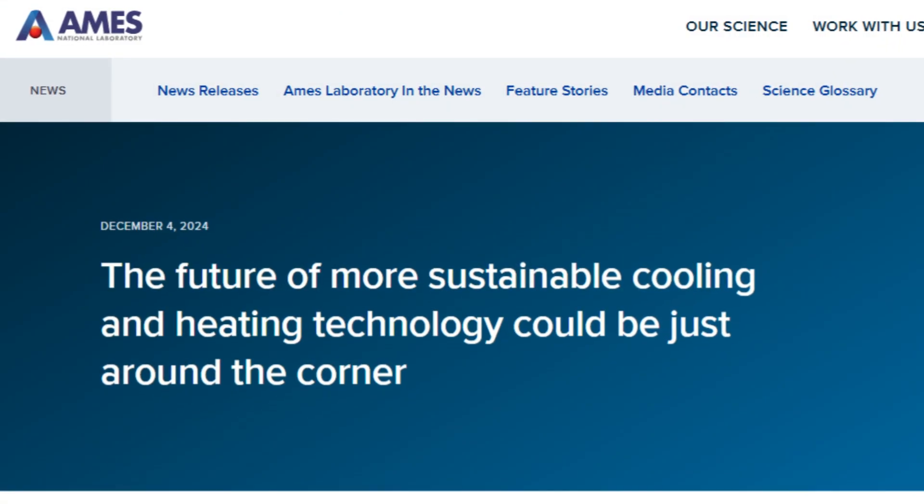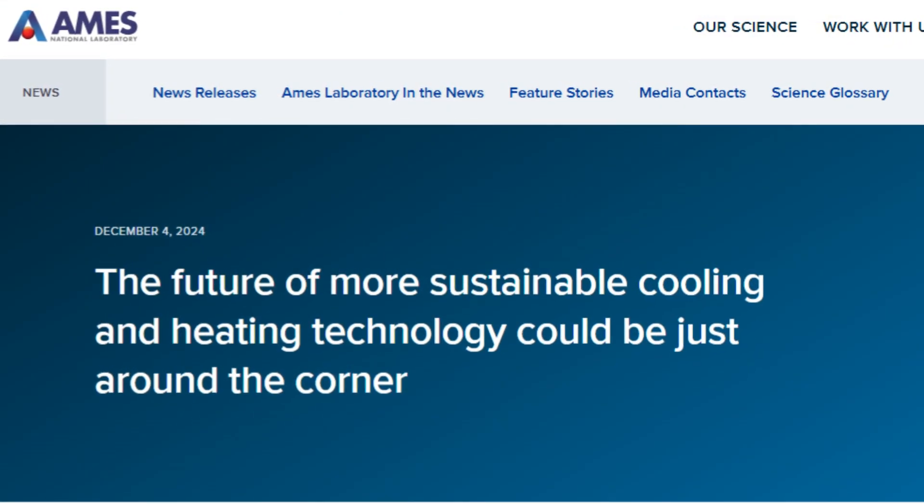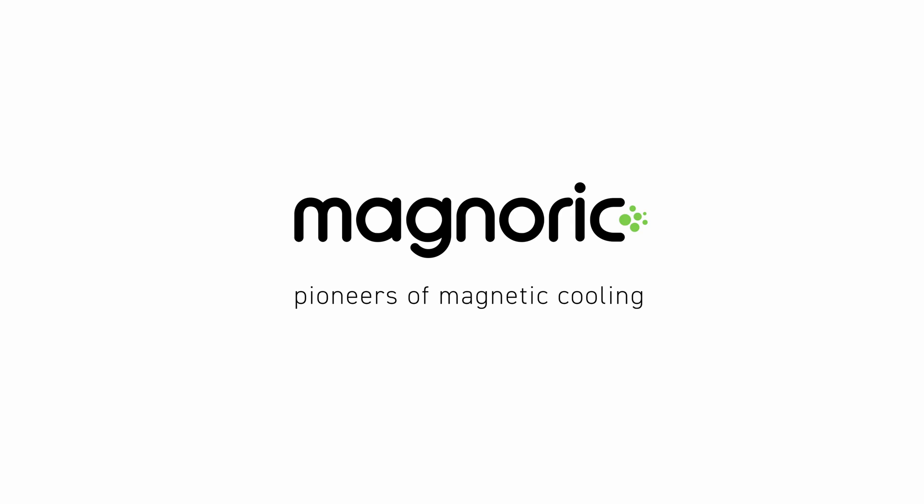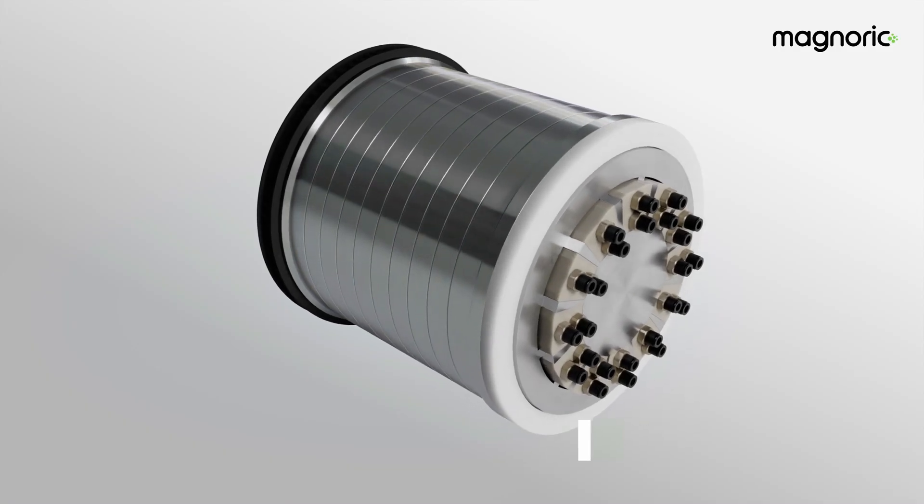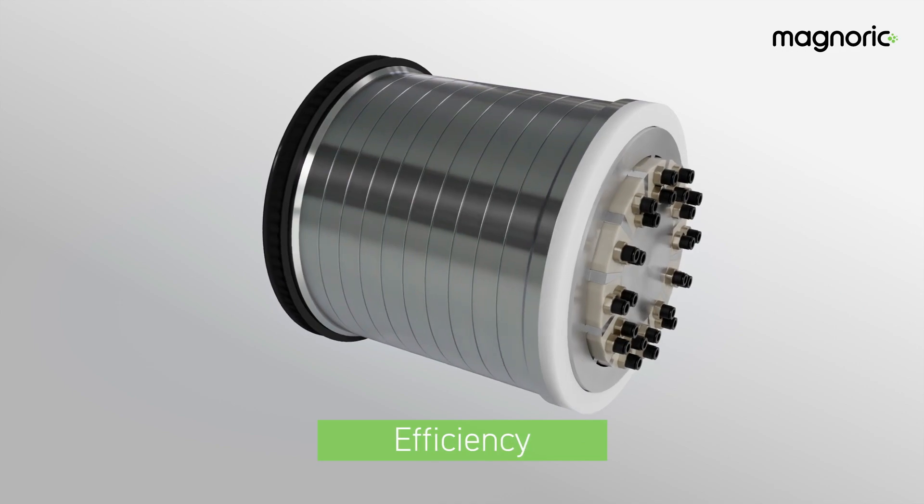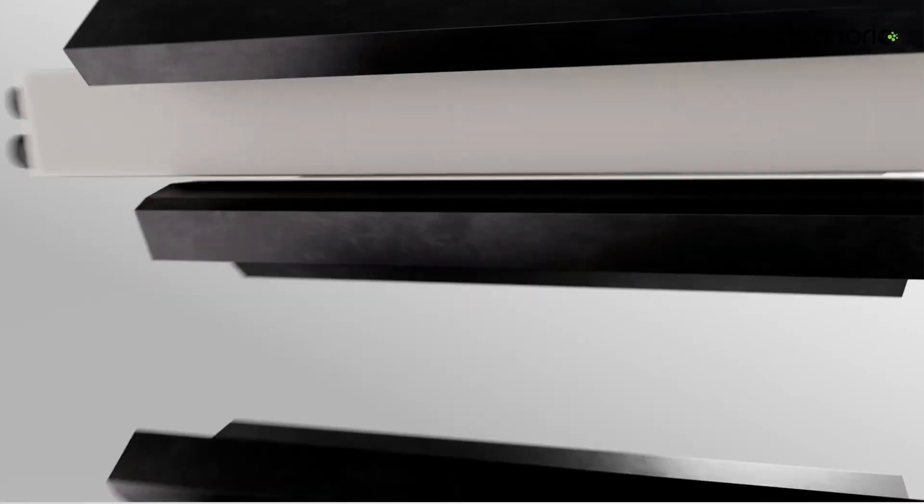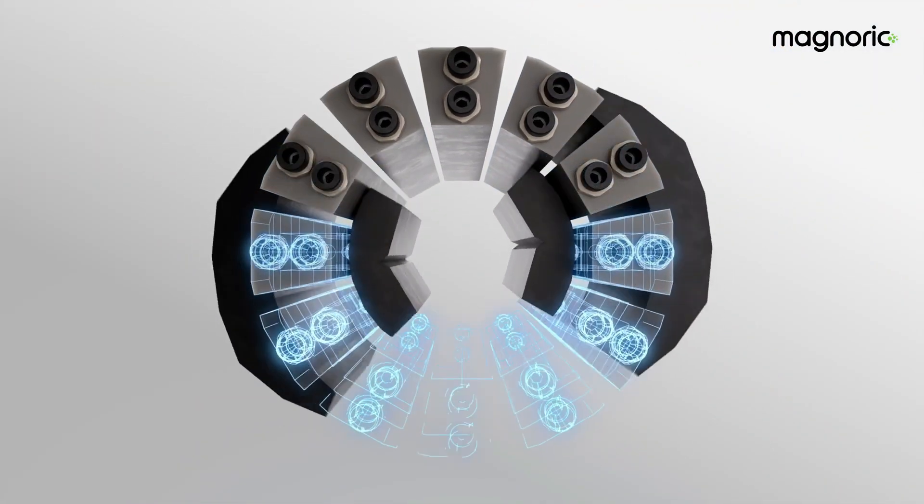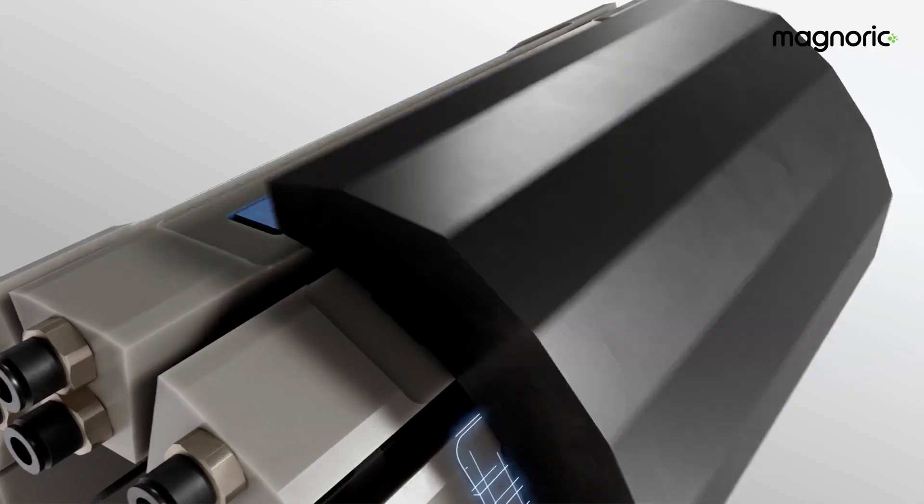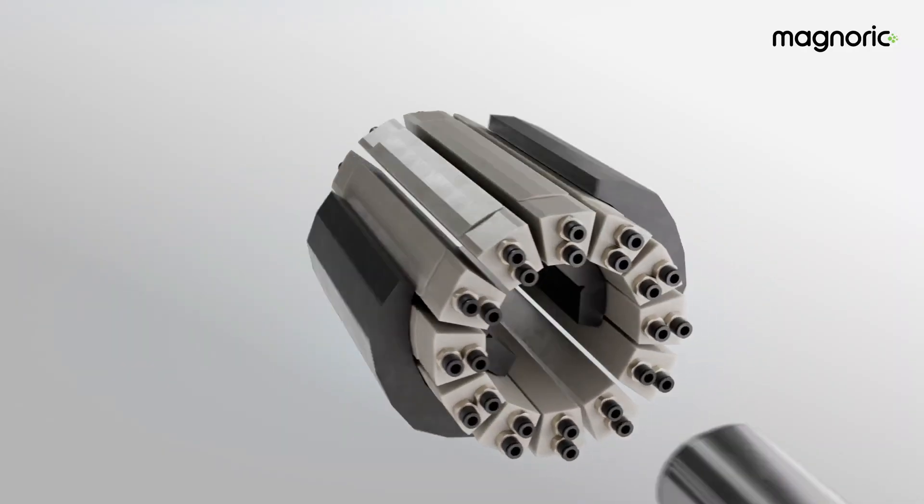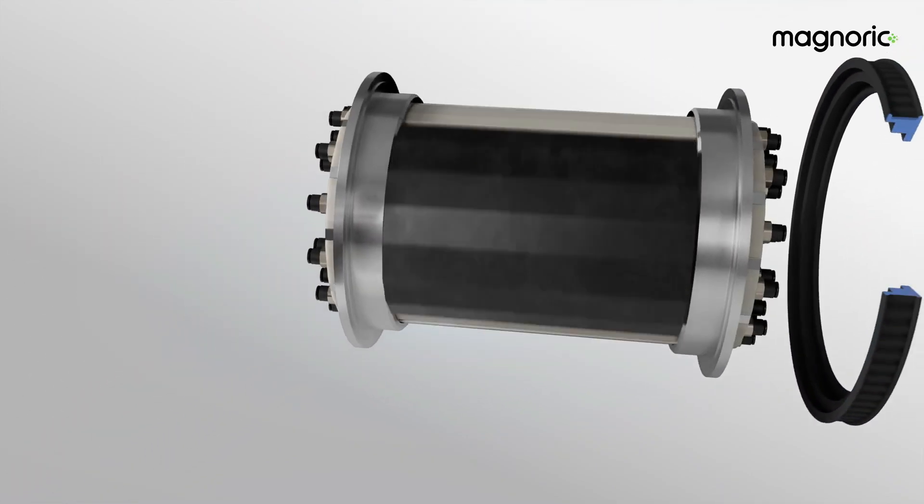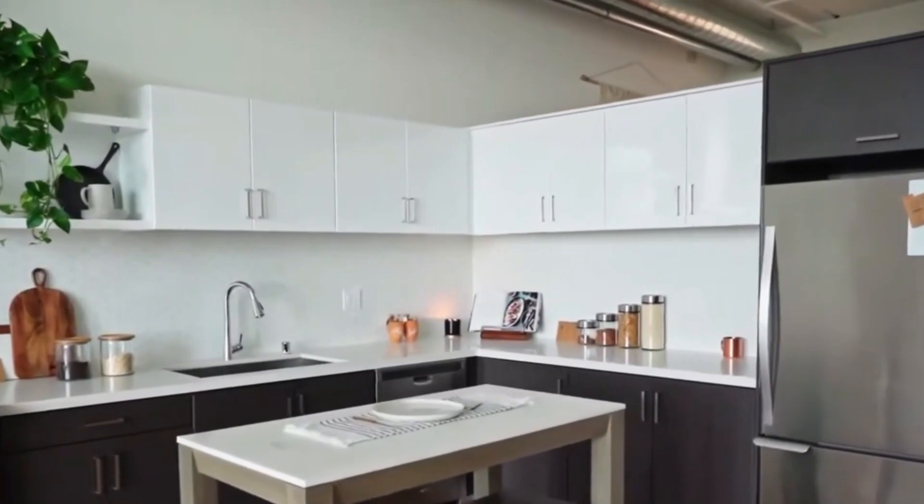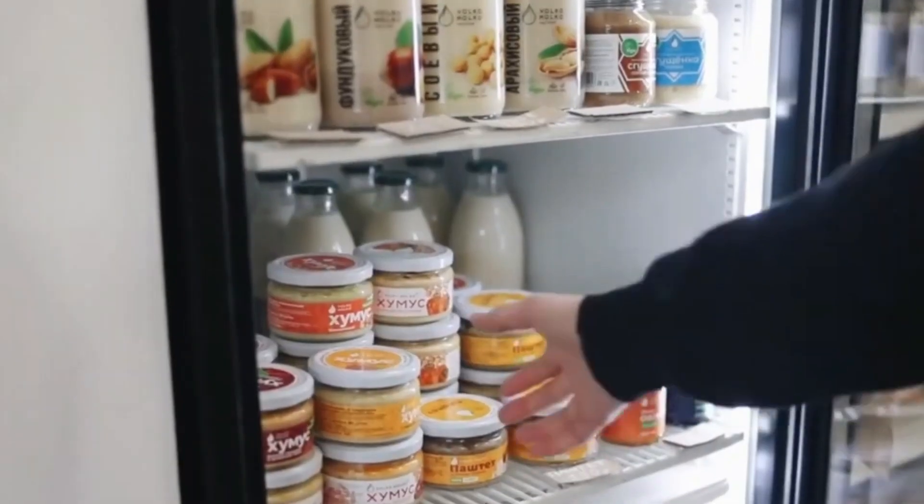While Ames focuses on R&D, Europe is sprinting toward commercialization. First up, Magnoric: a French-German startup that showcased a working magnetocaloric fridge at Chillventa 2024, a major heating and cooling trade fair. They didn't just talk about the tech. They served cold drinks from it. Magnoric is now entering the pre-industrialization phase, working on systems over six kilowatts for supermarkets and data centers. They're clear that while the tech is still evolving, industrial use is imminent.